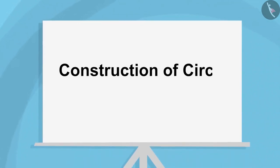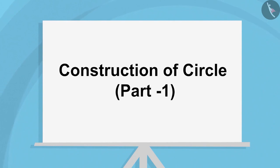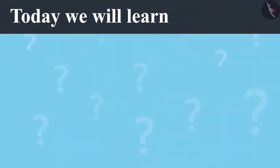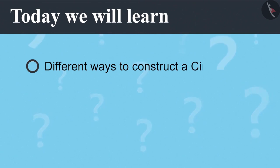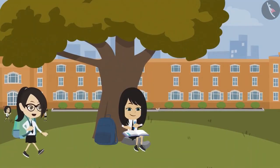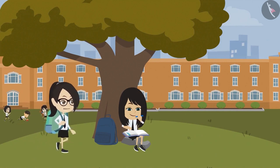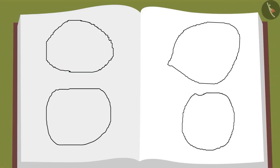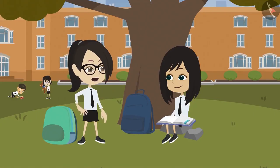Today we will learn different ways to construct a circle. One student says they are trying to make a round figure but is not able to. The teacher responds that the method is wrong and offers to show the right way to make a round figure.